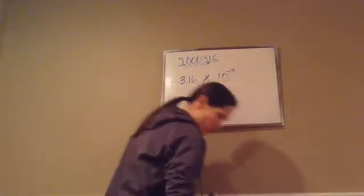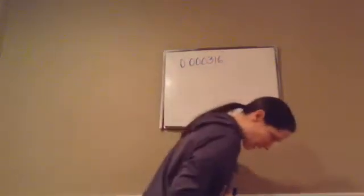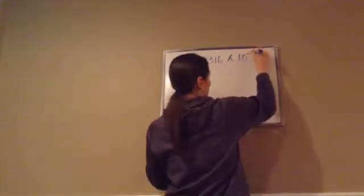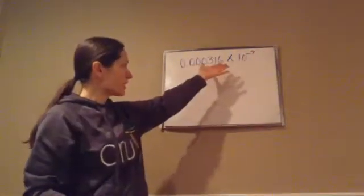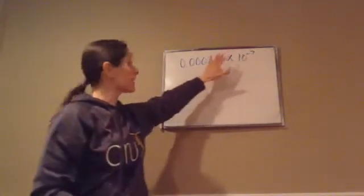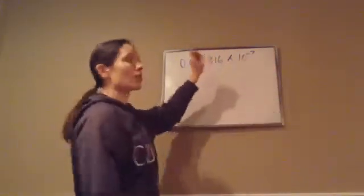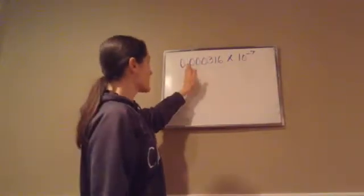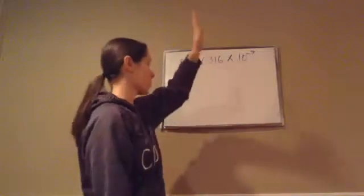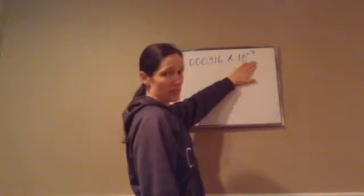Let's do a few more to make sure you're getting it. This one might be a little more confusing, so stay with me. It says 0.000316 times 10 to the negative 7. You might think it's already written in scientific notation because of the times 10 to the negative 7, but it's actually not the correct form. The decimal always comes after the first non-zero number, so this is scientific notation written wrongly.